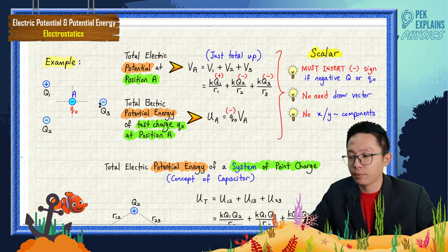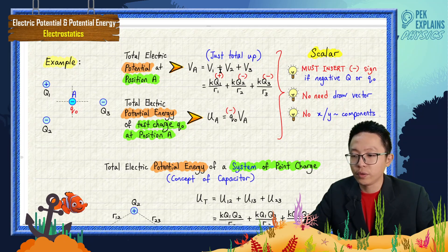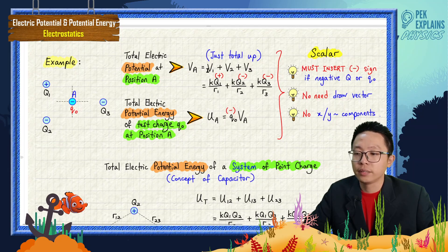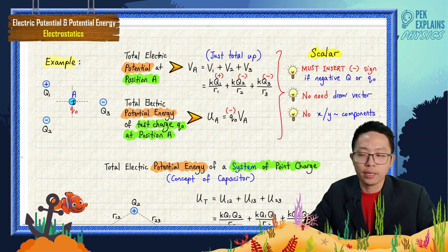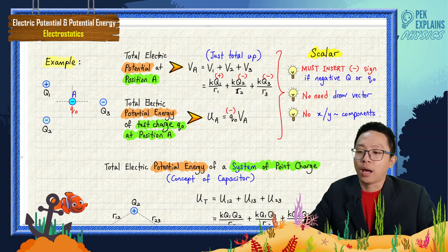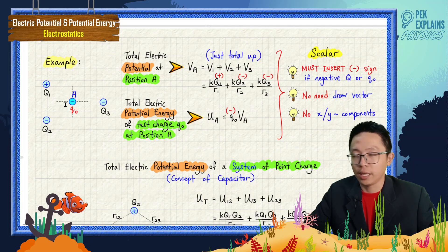Right now we have three point charges, so we have three potentials to total up: V1, V2, and V3. The formula is KQ over R. So we have Q1, Q2, Q3 and R1, R2, R3. R1, R2, R3 are the distances between each respective charge and point A. R1 is between Q1 and A, R2 is between Q2 and A, R3 is between Q3 and A.